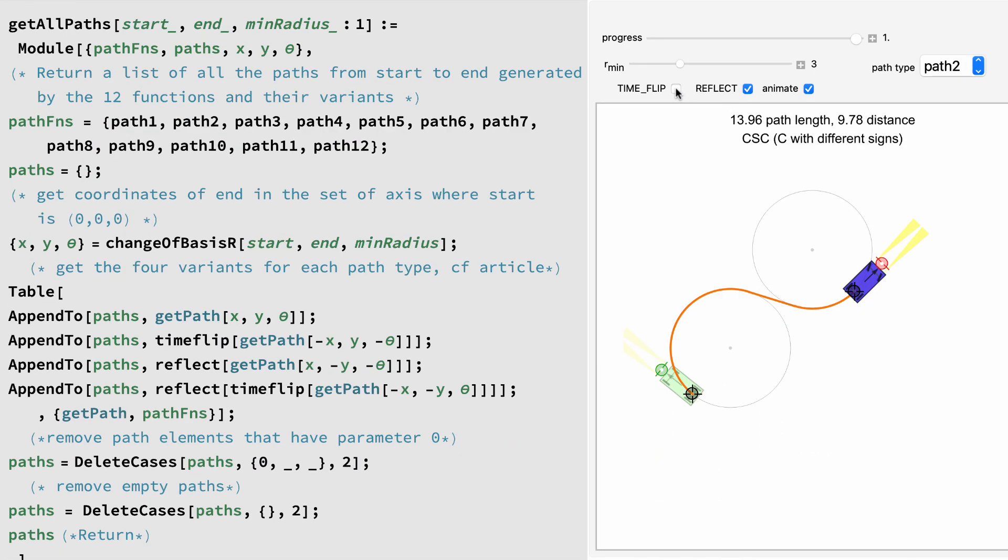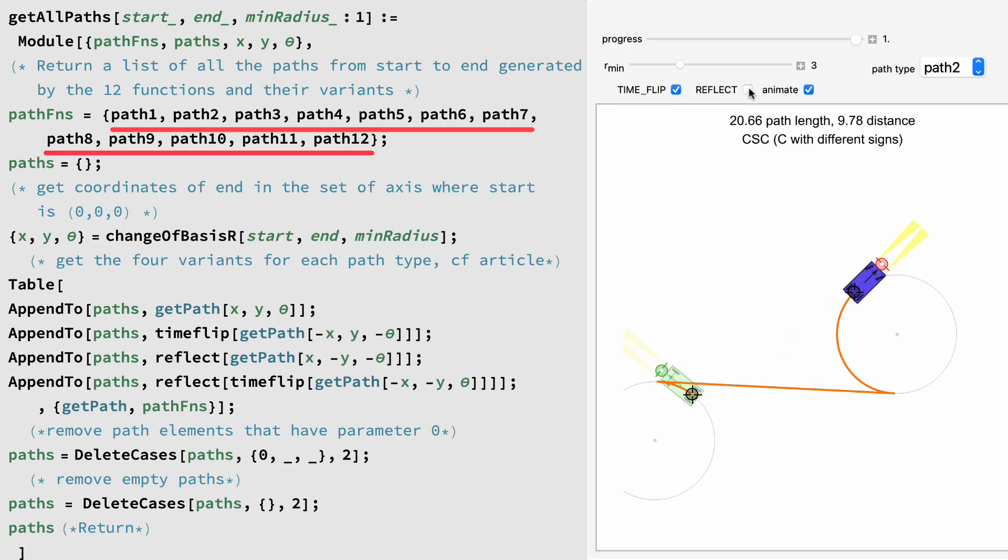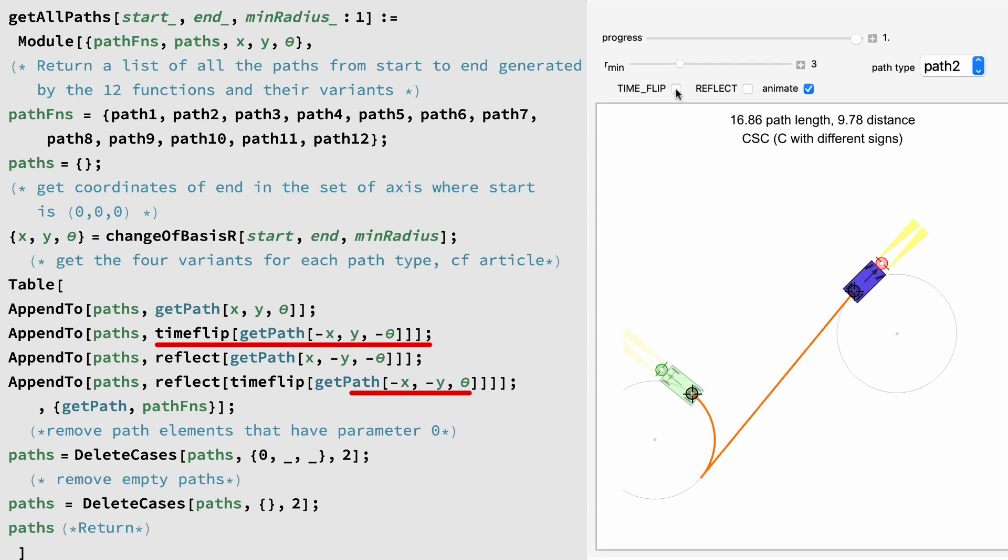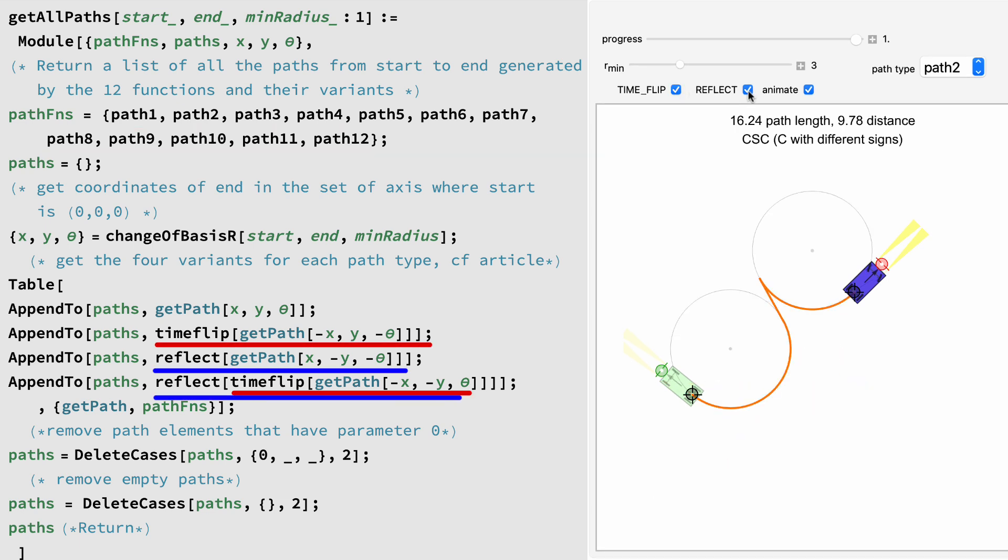Again, we do all 12 of these path types forward and backward in time and then both mirrored to get 48 paths.